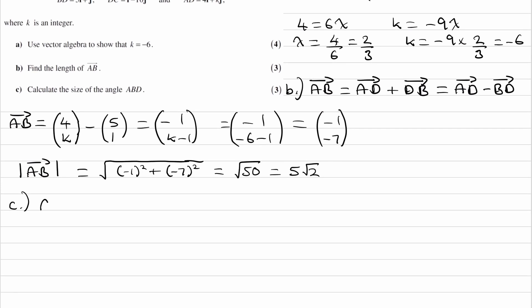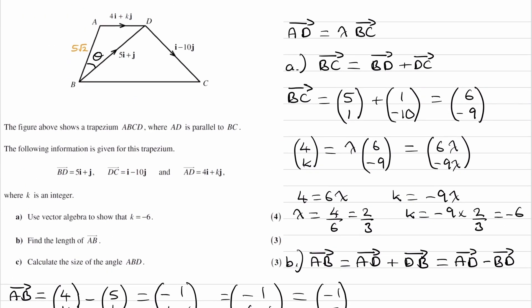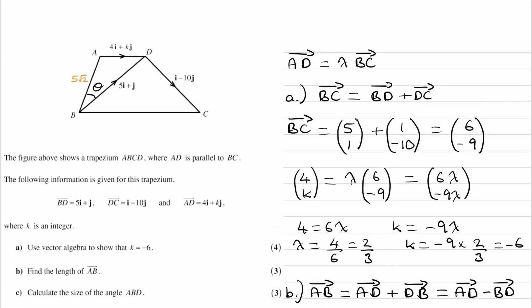So AD, which was 4 minus 6. The magnitude, therefore, would be the square root of 4 squared plus minus 6 all squared. And that'll be root 52. And then the other side, so let's put that on the diagram first. So this is root 52.